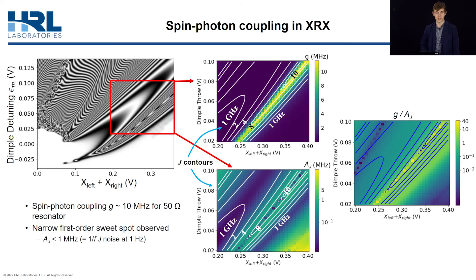When we take the ratio of these two quantities, we find that the result can exceed 10 along the center of the XRX seam, meaning that XRX may actually be a good candidate for real-world spin-photon coupling.